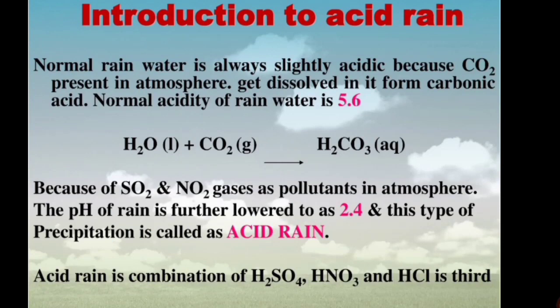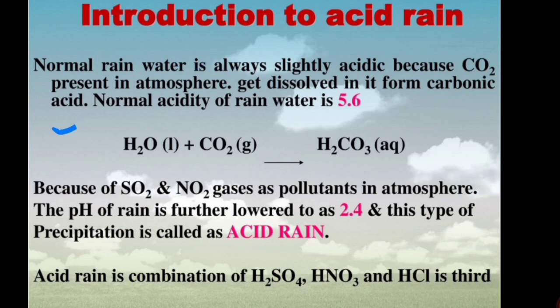Before going into acid rain, we should know that normal rain water is also acidic. Normal rain water is slightly acidic because the carbon dioxide present in the atmosphere dissolves in water to form a weak acid known as carbonic acid. That is what makes normal rain water acidic, with a pH of 5.6. When pH is less than 7, it is acidic; above 7, it is alkaline.